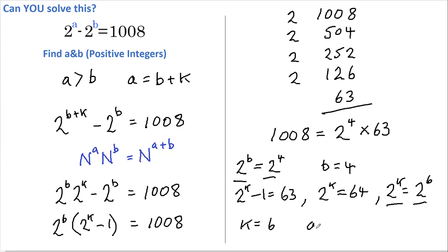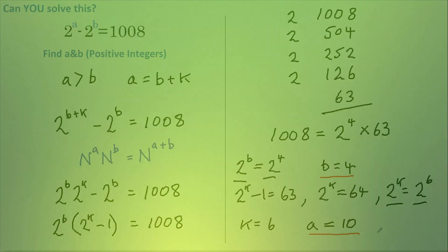And since we know that a equals b plus k, we can say that a must equal 4 plus 6, so a equals 10. And therefore these are our answers. Did you get it? Hope you enjoyed that. See you tomorrow for another video, or maybe in a few seconds if you click on one of these.